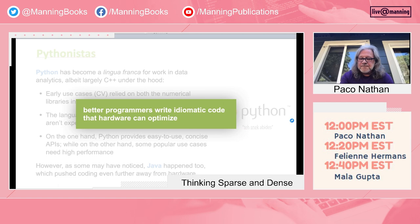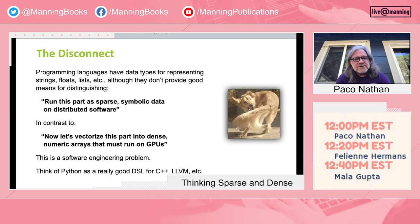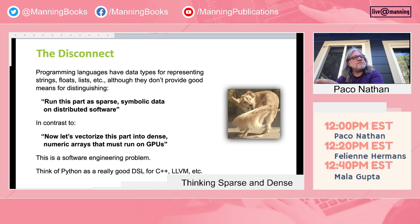Our point is that better programmers write idiomatic code that hardware can optimize — with all apologies to Martin Fowler. Even so, there's a disconnect: programming languages are really good at representing floats, lists, and strings, but they aren't so good at formally defining where in the code you need to focus on sparse symbolic work on distributed software — scale out — versus where you need to focus on vectorizing dense numerical work, probably running on a hardware accelerator. That's missing; it's a software engineering problem that must be done at the workflow level.